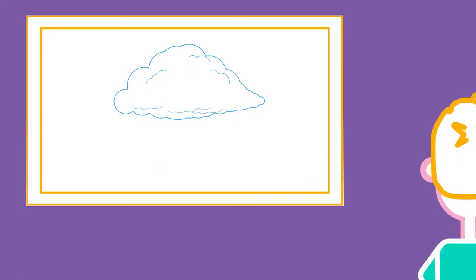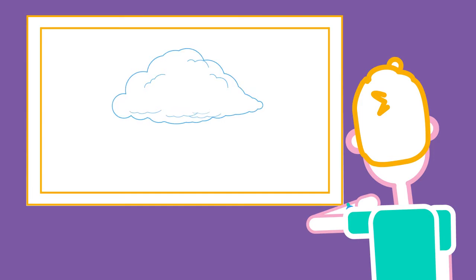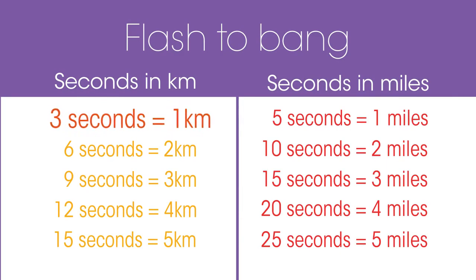Next time you see lightning, count how many seconds before you hear the thunder. This tells you roughly how far away the lightning is. If you're a kilometres person, remember three seconds for one kilometre. And if you're a miles person, remember five seconds for one mile.